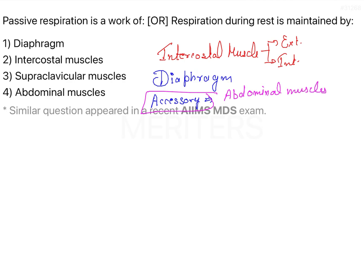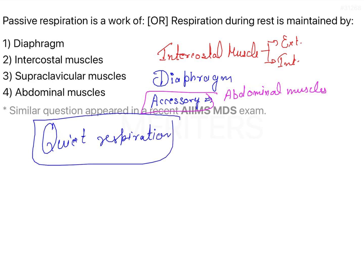These are the various muscles involved in the inspiration and expiration mechanism. Now, we will talk about quiet respiration, which is what they mean by respiration during rest. There are two stages of respiration: one is inspiration and the other is expiration.